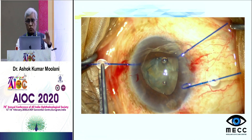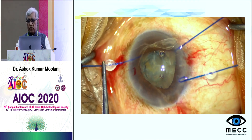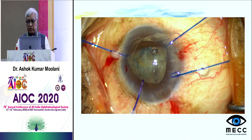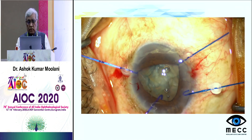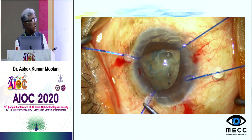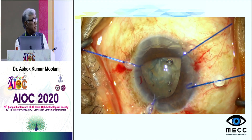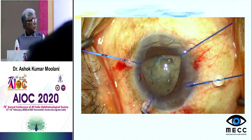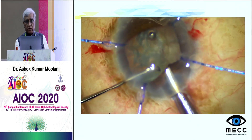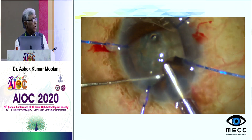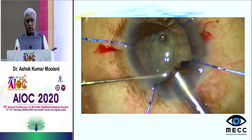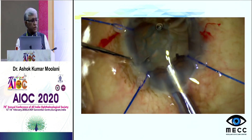Always put OVD between the iris and the anterior capsule to create a space for iris hooks to be placed. You can see in this video that in spite of using iris hooks, putting the phaco probe was difficult because of the floppy syndrome — the iris was coming in the way of the phaco probe and making the procedure difficult.